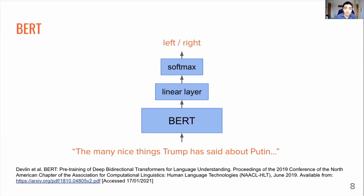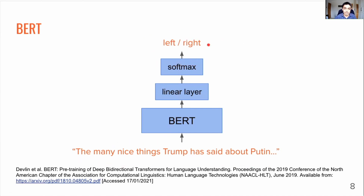The classifiers we're going to use are based off of BERT, which is a language representation model based off the Transformers architecture that achieves state-of-the-art performance in lots of different NLP tasks. With a linear layer plus a softmax layer, BERT can be used to take in raw sequences of text and produce a class prediction, which in our case is either left or right.